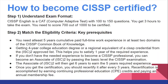How to become a CISSP Certified Professional? Step 1 – Understand the Exam Format. CISSP in English is a CAT (Computer Adaptive Test) with 100–150 questions. You get 3 hours to take the exam and you need 700 out of 1000 to be certified.